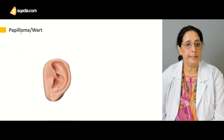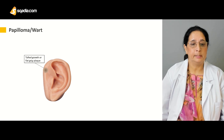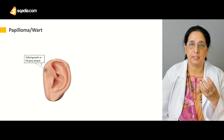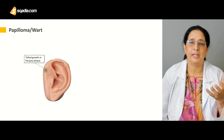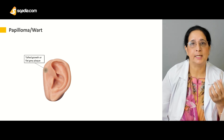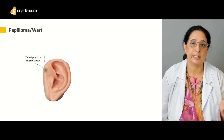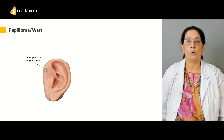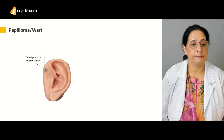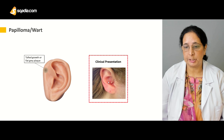Papilloma and wart are another benign tumor type. These can be a tufted or bunch-like growth — wart is a common example. Viral warts can develop in different parts of the body. They present as tufted growth or as flat gray plaques.